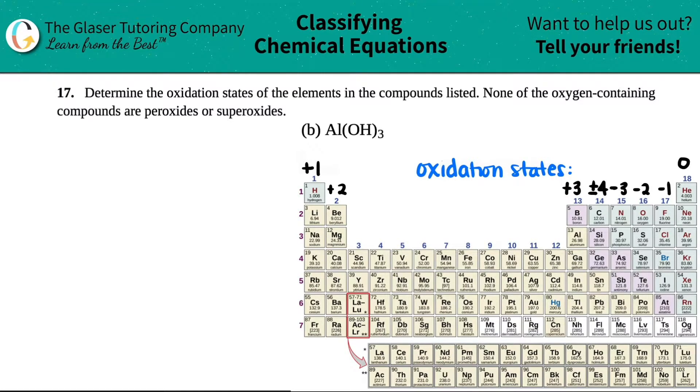Number 17. Determine the oxidation state of the elements and the compounds listed. None of the oxygen-containing compounds are peroxides or superoxides.